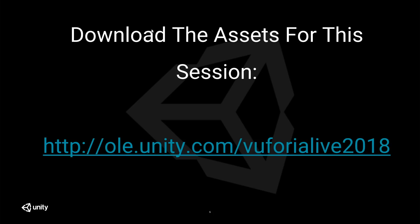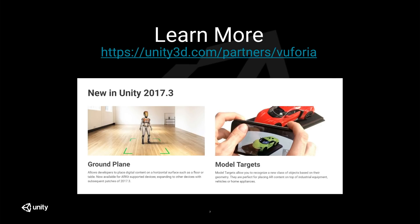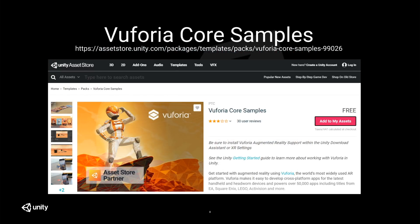You can download the assets for this session at ole.unity.com, Vuforia Live 2018 - this will be the incomplete version of the project that you can use to follow along. You can also learn more at the partner page for Vuforia at unity3d.com. There's also news about 2017.3: they're adding a ground plane capability and model targets, so you can look at a real 3D object in the real world and map AR content on top of it. We are also leveraging content from the Vuforia core samples, a great set of stuff available on the asset store for free.